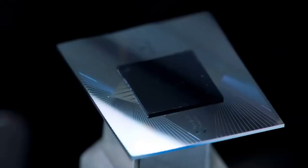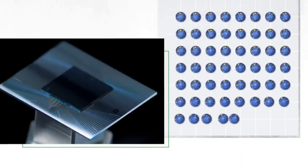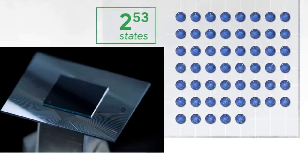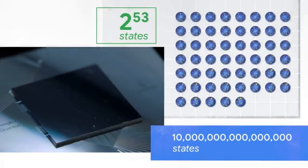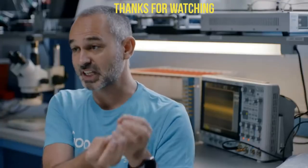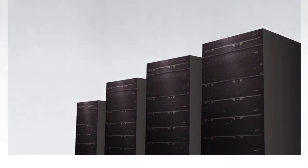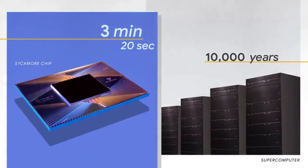The processor that achieved quantum supremacy is called the Sycamore processor, and it's parallel processing two to the 53 states, which is 10 million billion. That enormous amount of parallel processing is what gives it the power. Our estimate is that it will take thousands of years for the largest supercomputer in the world to complete the full computation.